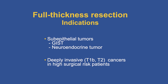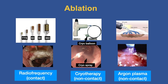The indications for full thickness resection are subepithelial tumors — specifically GIST tumors and neuroendocrine tumors, because these tend to originate from the deeper layers — and deeply invasive tumors: T1B and T2 cancers in high surgical risk patients. These are patients where we definitely want the oncologist involved, because we expect adjuvant therapy afterwards.